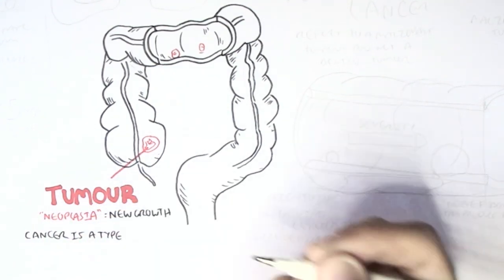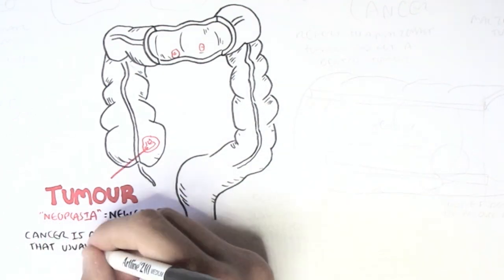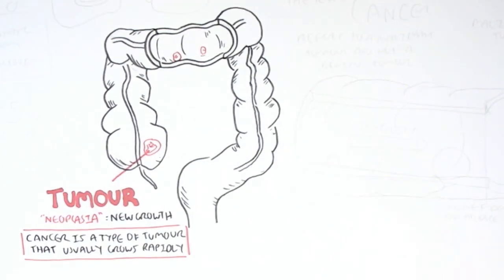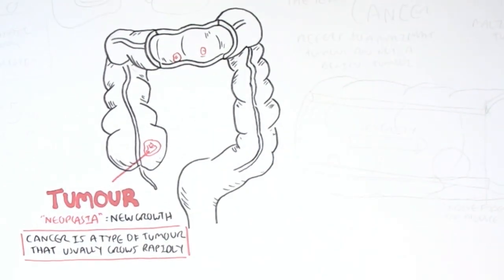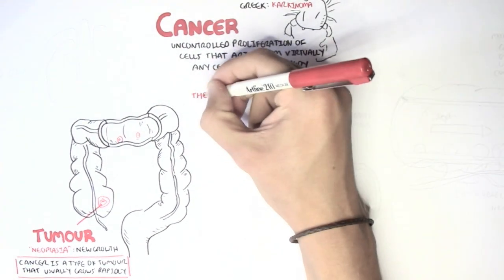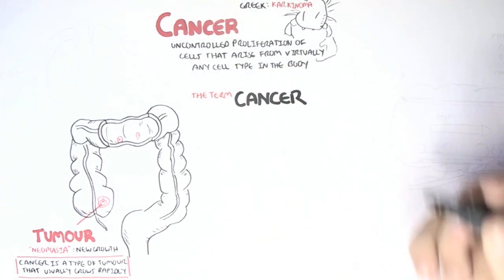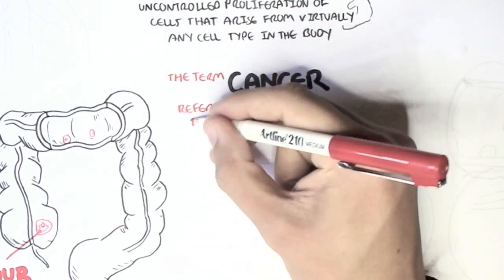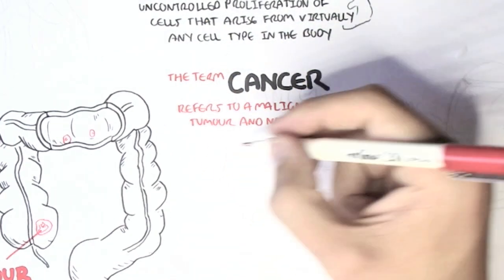Cancer is a type of tumor that usually grows rapidly, but not always. Some tumors are slow growing, such as the ones that occur in the lungs. Another fundamental thing to take in is that the term cancer refers to a malignant tumor and not a benign tumor.